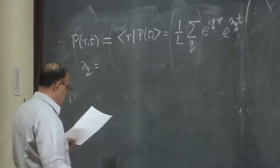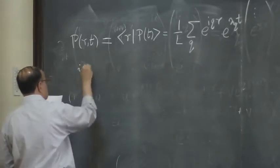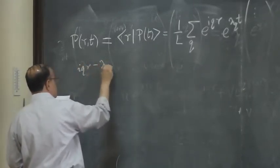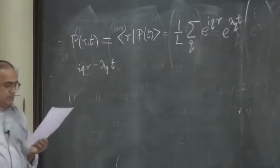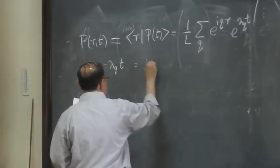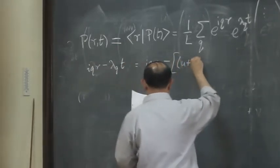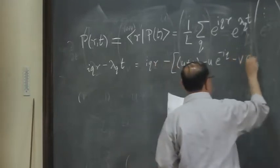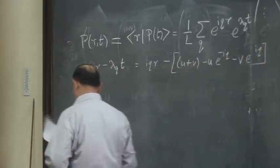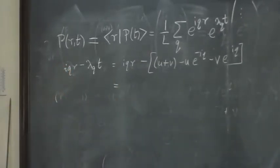e^(lambda_q t), keeping that. We are almost done. Well, we better work out lambda_q. Rather than work out lambda_q, let's say work out whatever is up in the exponent. What's up in the exponent is iqr minus lambda_q times t. So let's go.